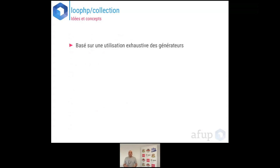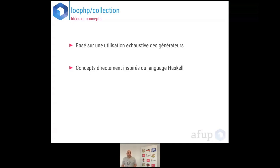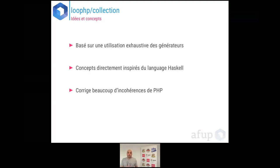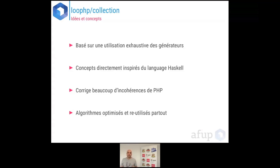Cette librairie est basée sur une utilisation exhaustive des générateurs — il n'y a que ça dans la librairie, ce qui rend leur utilisation facile. Ce sont des concepts directement inspirés du langage Haskell — j'ai appris Haskell en parallèle et j'ai implémenté en PHP des choses découvertes dans ce langage. La librairie corrige toutes les incohérences de PHP discutées au début. Elle utilise des algorithmes optimisés — parmi les 85 méthodes, environ trois quarts utilisent des fonctions déjà existantes dans la librairie.